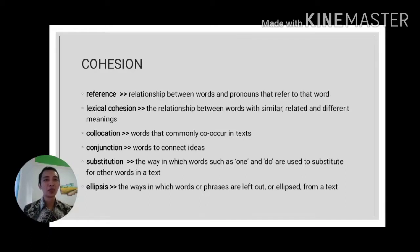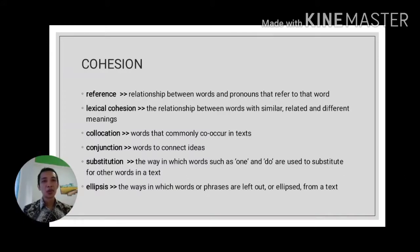Reference is about the relationship between words and pronouns that refer to those words — for example, using 'I', 'they', or 'it' to represent something. Lexical cohesion is about the relationship between words with similar, related, and different meanings. Collocations are about words that commonly co-occur in a text. We will discuss the first three characteristics of creating cohesion inside the text, and the rest in the next video.